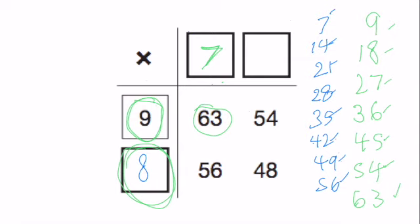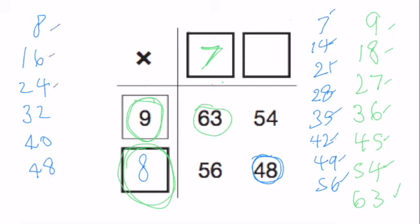So now that we have 8 here, we can see this one is 48. 8 times something is 48. So if we write out our 8 times table. So 8, 16, 24, 32, 40, 48. 1, 2, 3, 4, 5, 6.